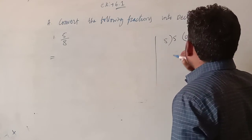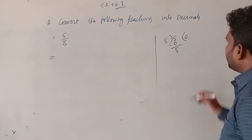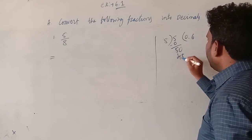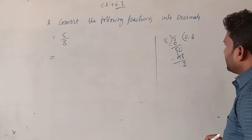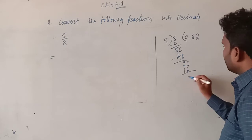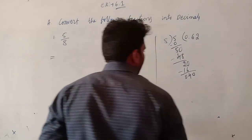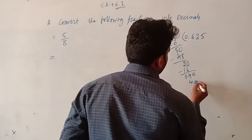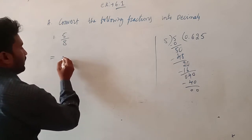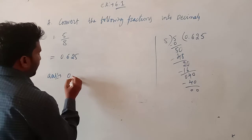8 into 50 is 0, remainder is 5. Taking the point, take a 0: 8 into 50. 8 sixes are 48. Now the remainder is 2, so take another 0. 8 twos are 16. When subtracted we get 4. Take another 0: 8 fives are 40. Finally we got remainder 0. So 5 by 8 can be written as 0.625.